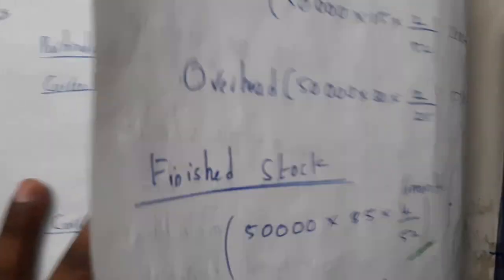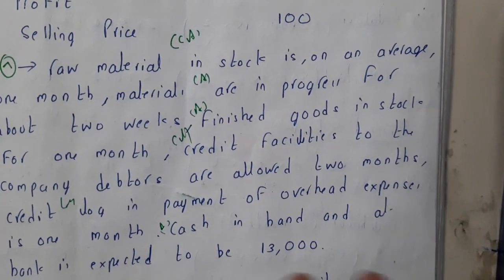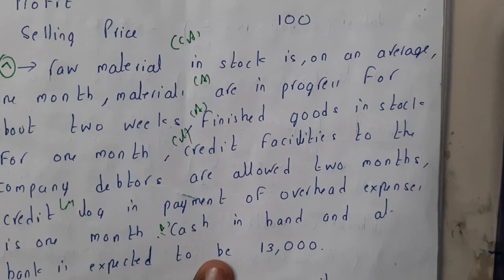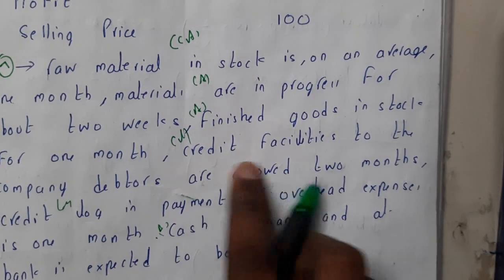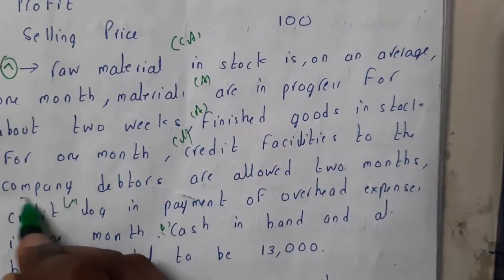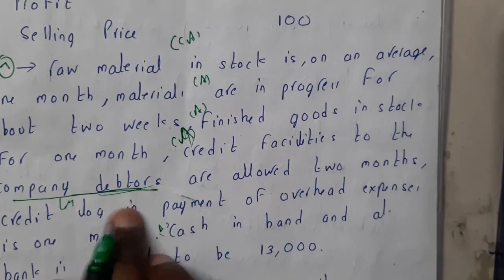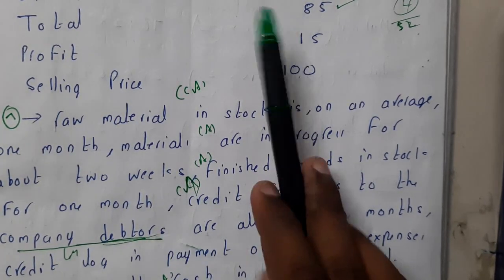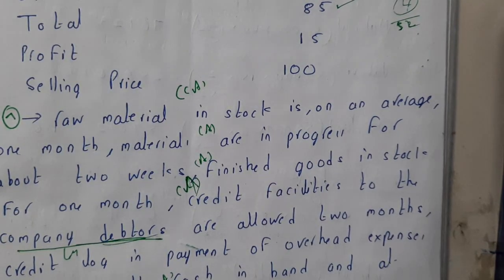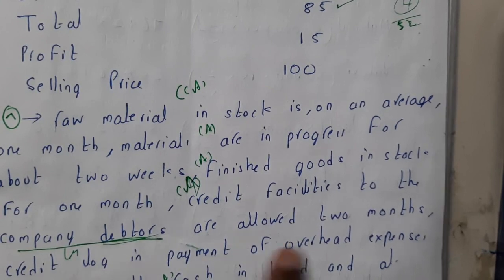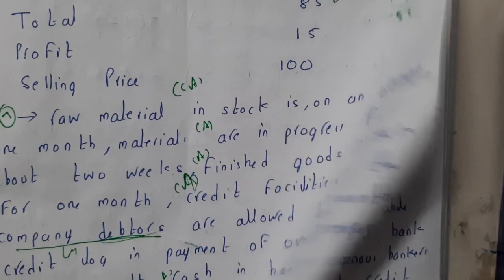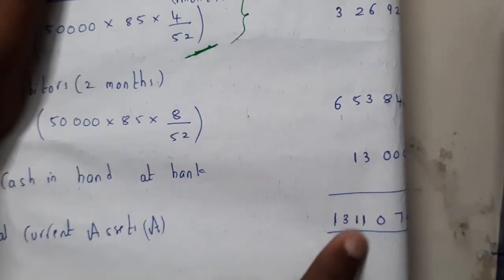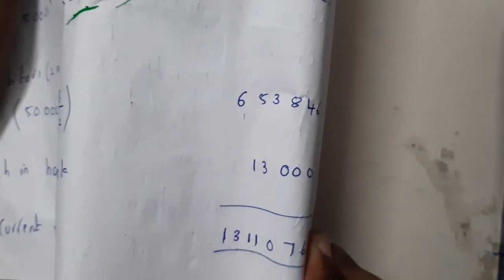We also need to include debtors as a current asset. Credit facilities to the company — the company debtors are allowed two months, so they will repay us the cost amount of 85 rupees per unit. Calculation: 85 into 50,000 into 8 by 52 (two months). Adding cash in hand of 13,000, the total current assets come to 13,11,076 rupees.